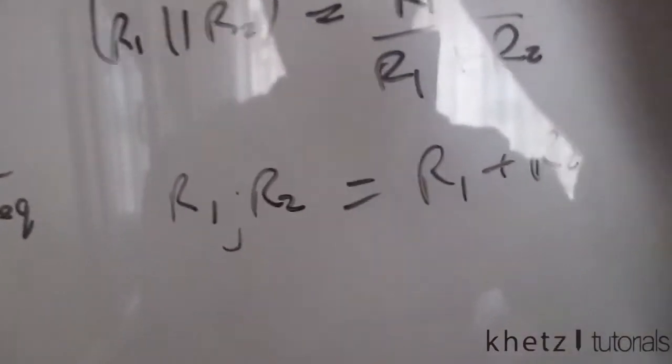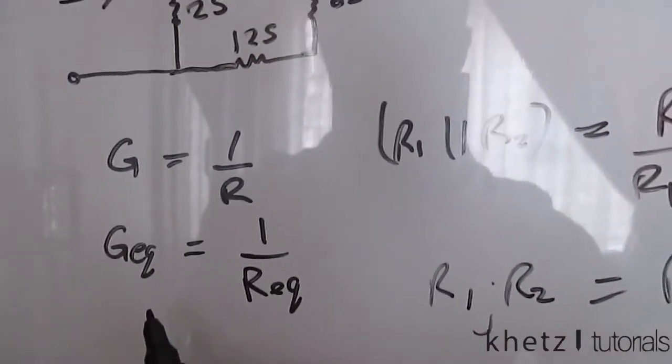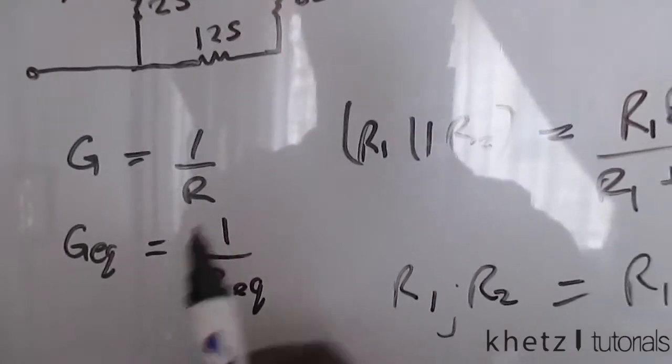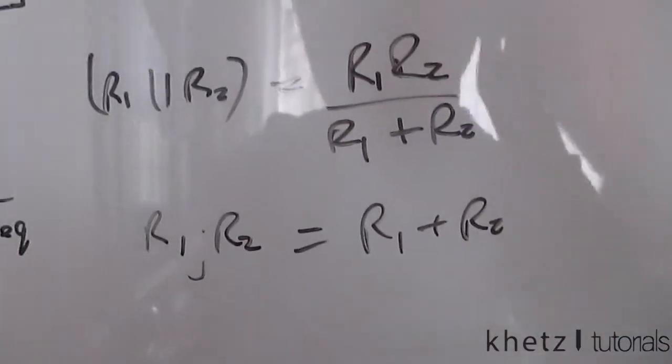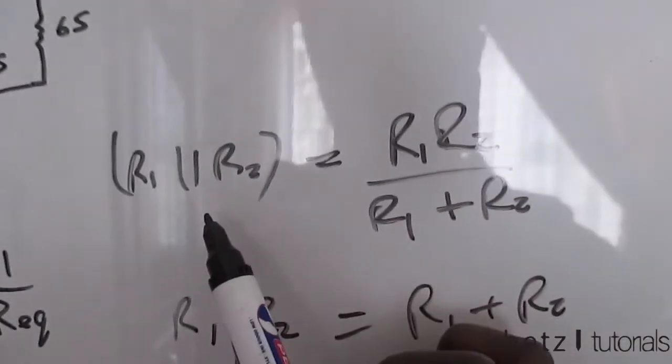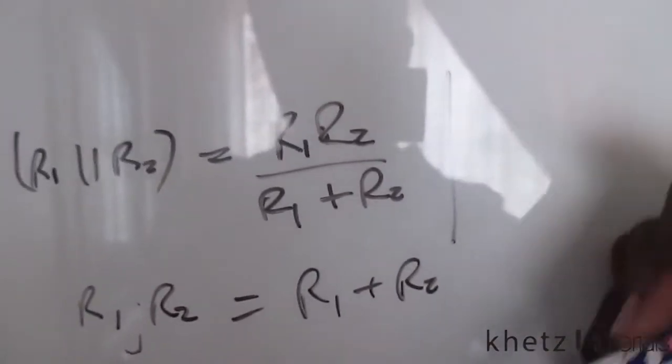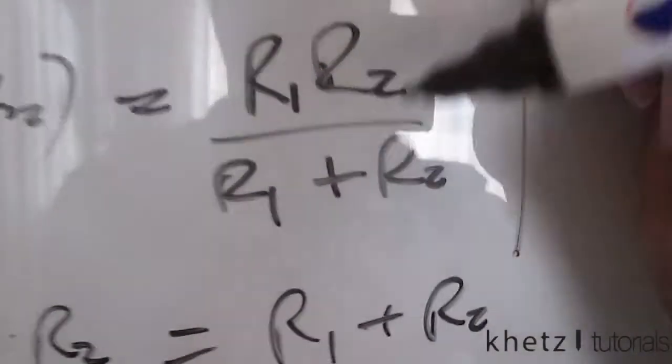But now that we have this relationship, which says conductance is a reciprocal of resistance, then this is swapped around for conductance. So in this case, we have parallel resistors, and this is how we calculate the equivalent. But for conductance, we apply this formula here.